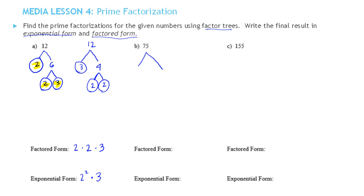You can start either way. I'm going to do 25 times 3. Now 3 is prime so I'm going to circle it. 25 is not prime so I keep factoring it. It is equal to 5 times 5. 5 however is prime.